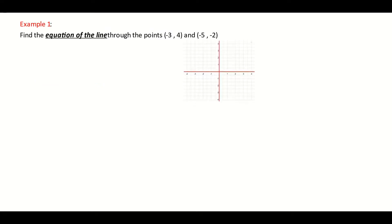In this example they're asking us to find the equation of the line through the two points, minus 3, 4 and minus 5, minus 2. Like we said up above, to form the equation of a line we need two things. We need the slope and we need a point. So first thing we need to do is we need to go off and find the slope between those two points.